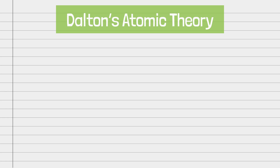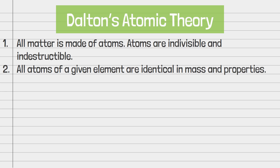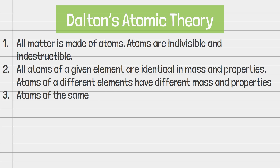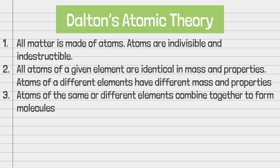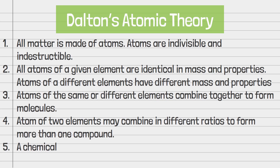Let's sum up Dalton's atomic theory. First, all matter is made up of atoms; atoms are indivisible and indestructible. Second, all atoms of a given element are identical in mass and properties, and atoms of different elements have different mass and properties. Third, atoms of the same or different elements combine to form molecules in simple whole number ratios. Fourth, atoms of two elements may combine in different ratios to form more than one compound. Fifth, a chemical reaction is a rearrangement of atoms.